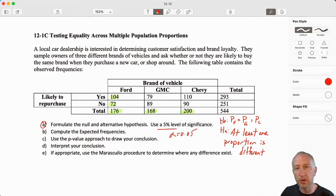Now, I want to go through and calculate our expected values under the assumption that the null hypothesis is true. So if the null hypothesis is true, I would expect 293 out of 544.